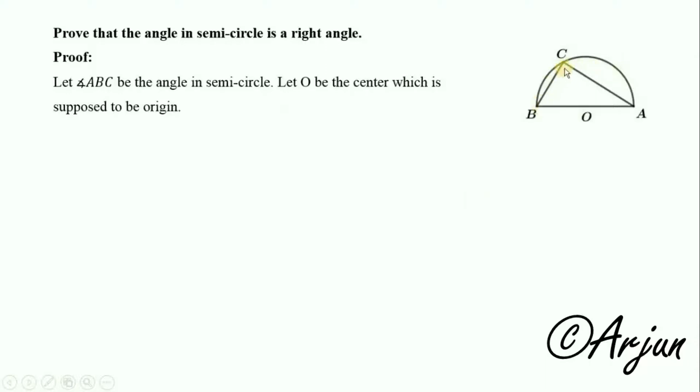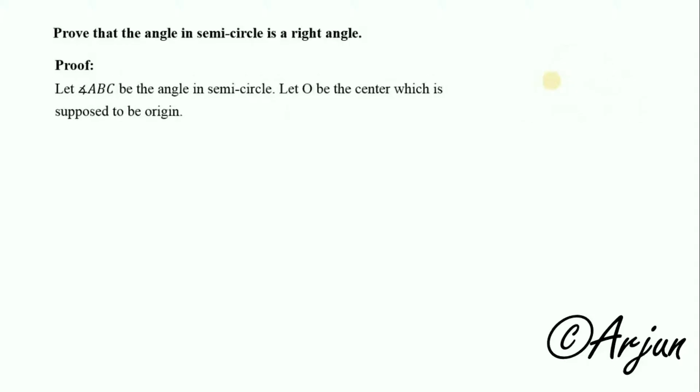Let O be the center of the circle which is supposed to be the origin. Then by the triangle law of vector addition, CA equals CO plus OA.